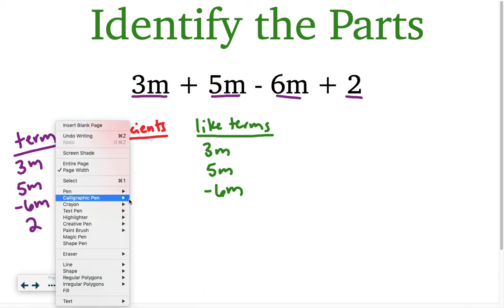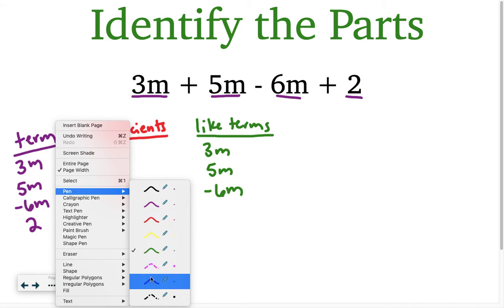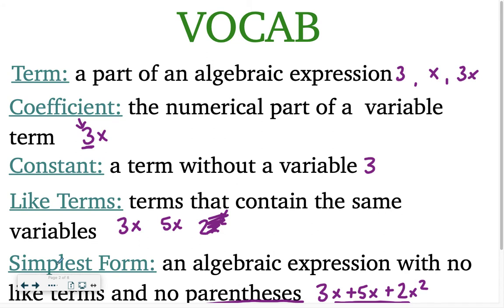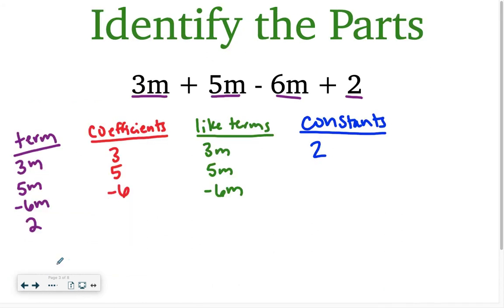And another term that we talked about on the last page was constants. And we have one constant, right? That would be the number 2. Remember, constants are the ones without variables. So those would be all of the different parts for this problem. So terms, coefficients, constant, and like terms. I mixed up the order just a little bit. But if the book asks you to identify the parts, this is what you have to do.